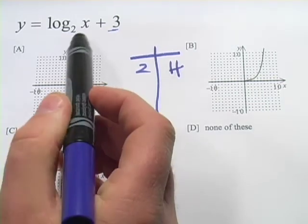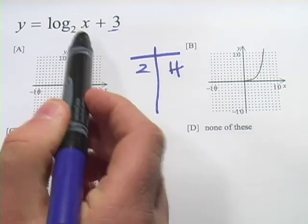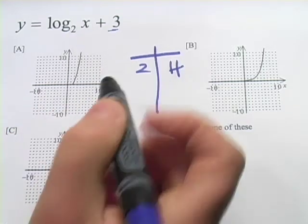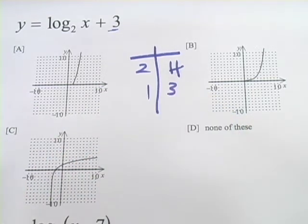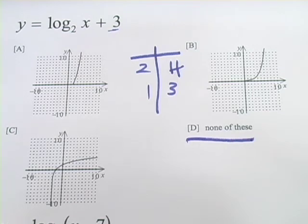Let's try another one. Well, if we put in 1 for x, then the power would be 0, so that would be 1, 3. And the point 1, 3 does not appear to be on any of these graphs either. So it looks like we're going to get a none of these on this one.